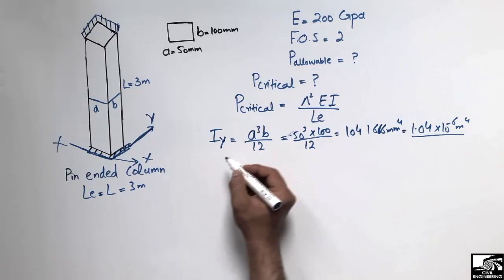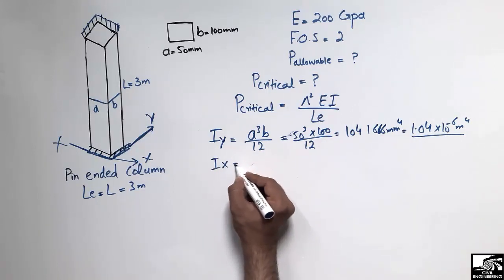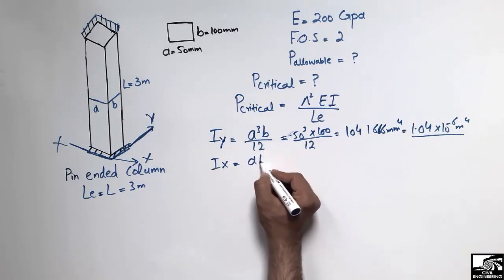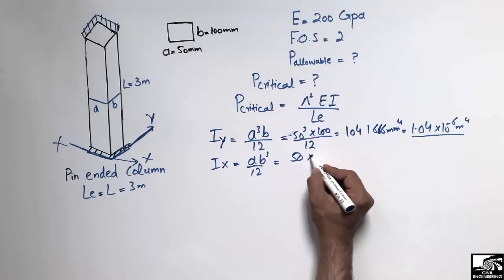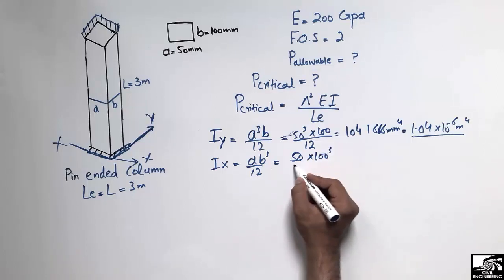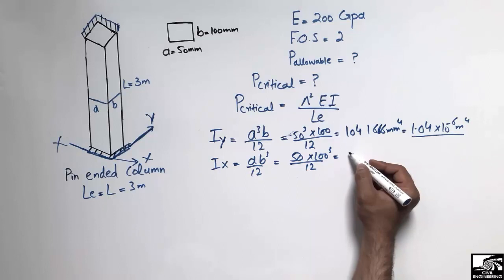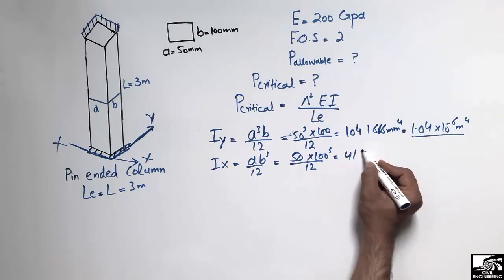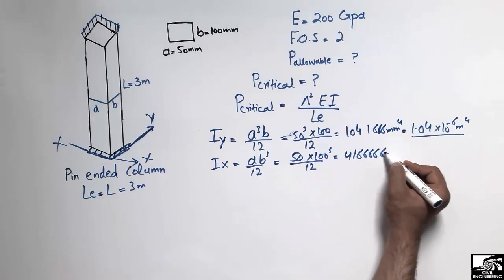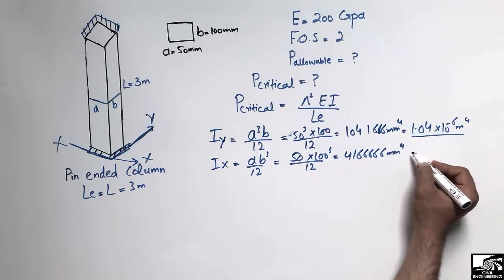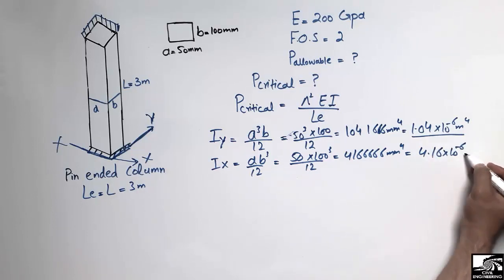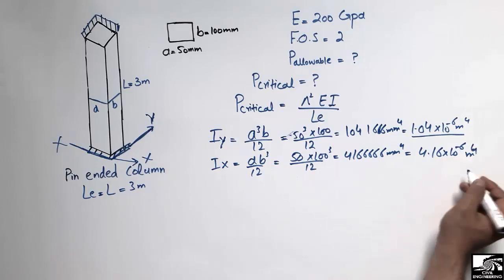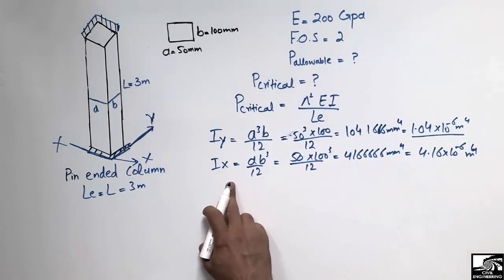Similarly, the moment of inertia along the X-axis: I_X = AB³ / 12 = (50 × 100³) / 12 = 4,166,666 mm⁴. Converting to meters: I_X = 4.16 × 10⁻⁶ m⁴.